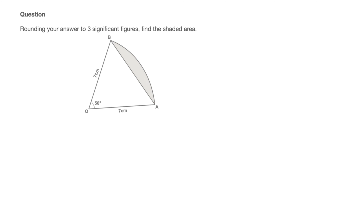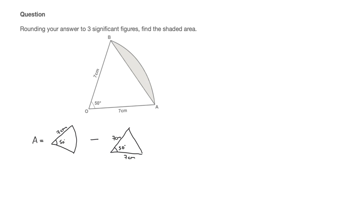To calculate this area, which I'll call capital A, it helps to draw little illustrations that summarize the method. First, I'll calculate the area of this circular sector — the angle is 50 degrees and the radius is seven centimeters. I'll then subtract the area of triangle OAB, which has an interior angle of 50 degrees and two side lengths of seven centimeters. Subtracting this triangle from the circular sector leaves us with the area of the circular segment.